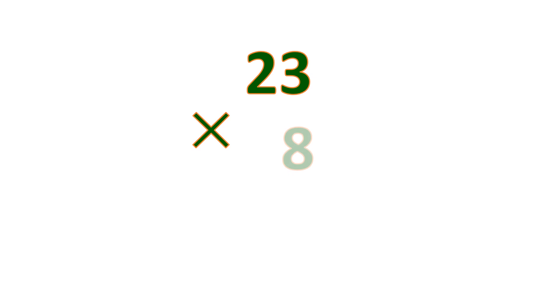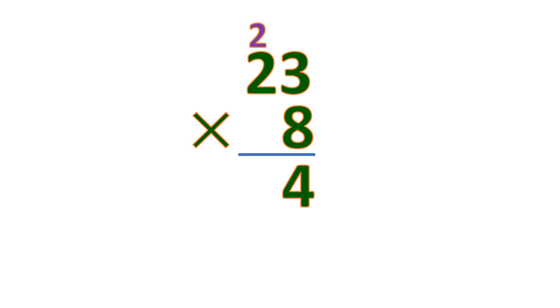Now, how about if it involves regrouping? Let's take, for example, 23 multiplied by 8 — a two-digit multiplicand multiplied by a one-digit multiplier. So 3 times 8 is 24. We cannot write 24 as is; we put 4 and regroup the 2 by placing it on top. That is regrouping, commonly known as carrying. So 2 times 8 is 16, plus 2 is 18. The product of 23 and 8 is 184.